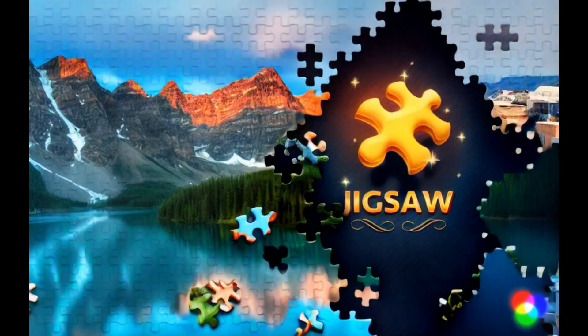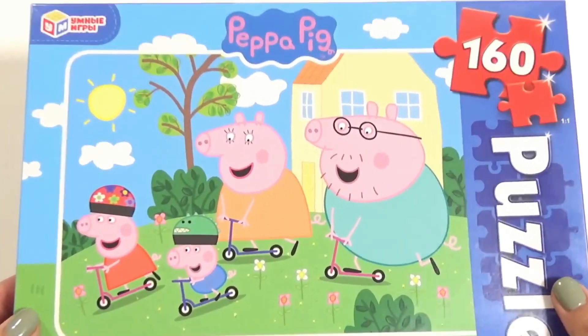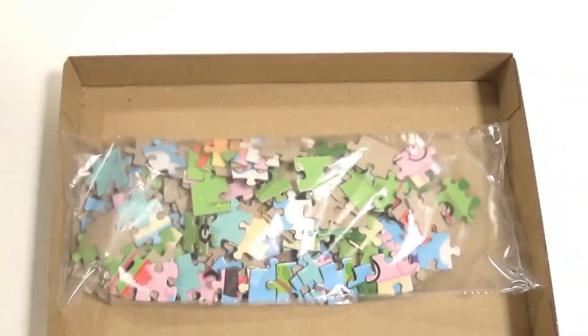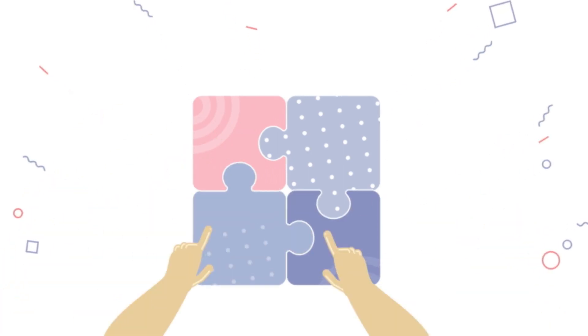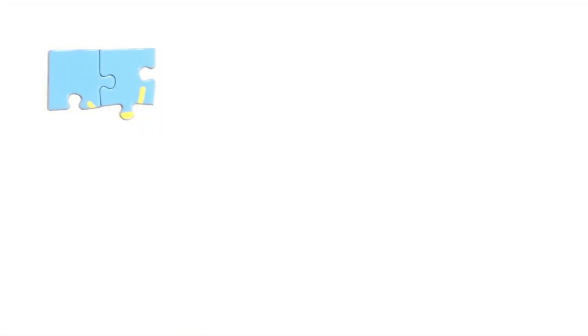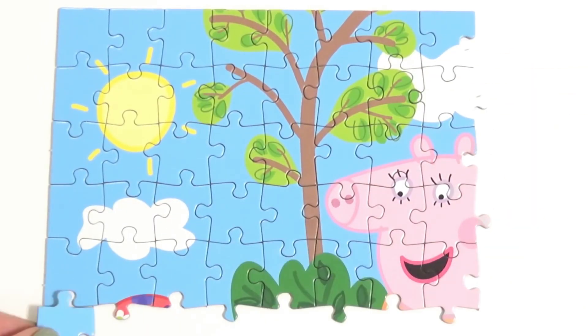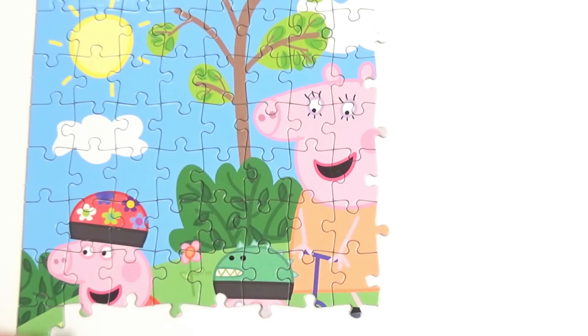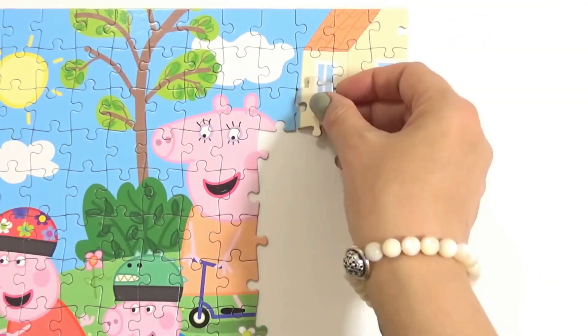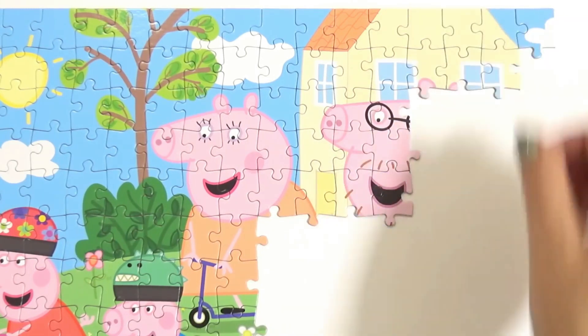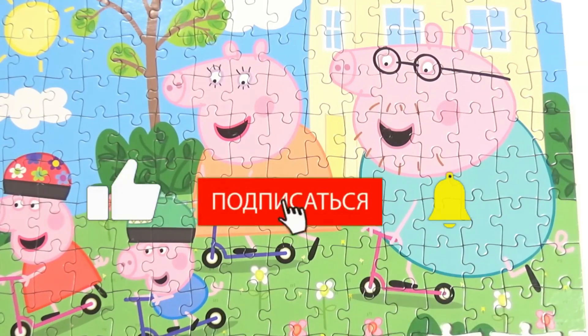To illustrate entropy, let's use the example of a jigsaw puzzle. Imagine you have all the pieces of a jigsaw puzzle in a box. There's only one specific arrangement of these pieces that creates a complete picture. This arrangement represents a state of order. However, there are countless ways the pieces can be arranged randomly without forming a coherent picture. These random arrangements represent states of disorder. The key idea here is that there are far more possible arrangements that result in disorder than there are arrangements that result in order.